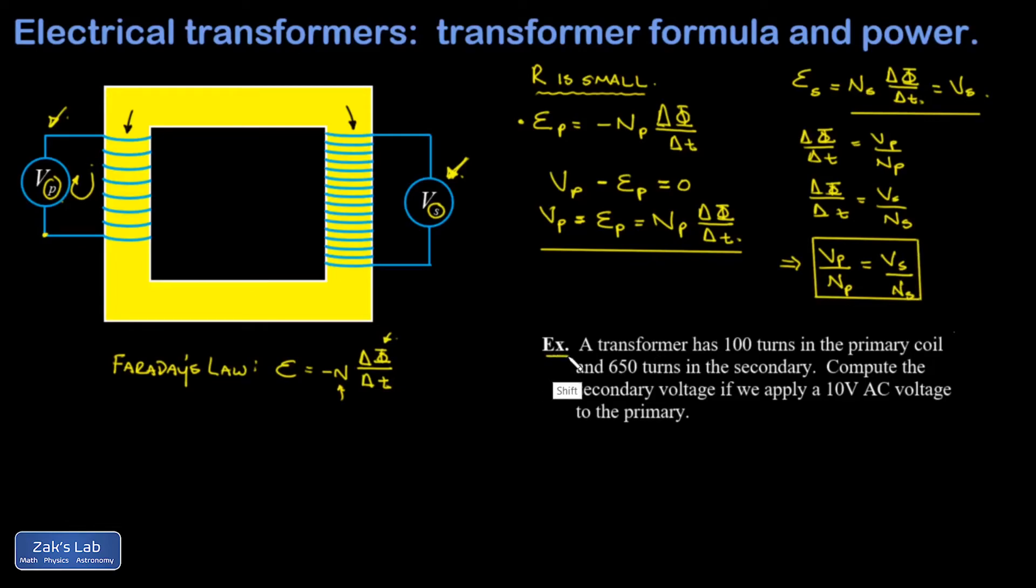So let's check out a short example. I have a transformer with 100 turns in the primary coil, 650 turns in the secondary coil, and I want to compute the secondary voltage if we apply a 10 volt AC voltage to the primary. So really, we're just plugging into the transformer formula, and I'm after the secondary voltage. And I want to point out here that any time the number of turns in the secondary is bigger than the number of turns in the primary, you're going to get an increase in the voltage. And what we're looking at here is a step-up transformer. So I get 650 over 100. Voltage in the primary was 10. Cancel a factor of 10, and I end up with 65 volts for my output.